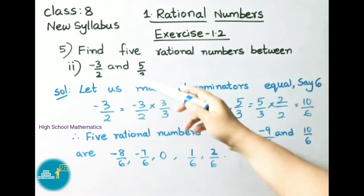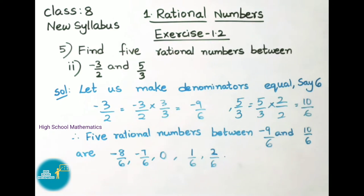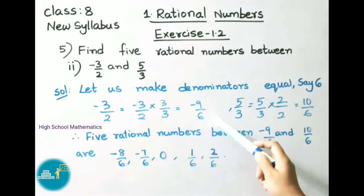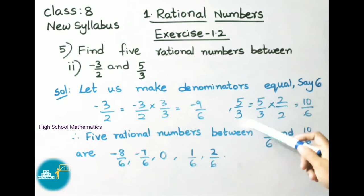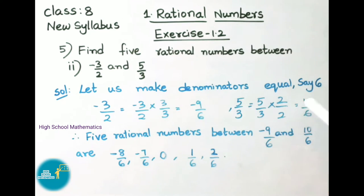See now question 5, second sum: -3/2 and 5/3 — we have to find 5 rational numbers between them. Let us see the solution. Let us make denominators equal, say 6. For denominator 2, by what number if we multiply we get 6? That is 3. So -3/2 becomes -9/6. For the second rational number 5/3, for 3, by what number if we multiply we get 6? That is 2. So we multiply numerator and denominator by 2: 5 × 2 = 10 and 3 × 2 = 6. So we converted 5/3 as 10/6.